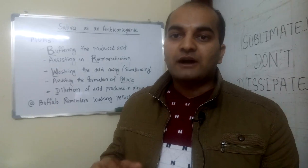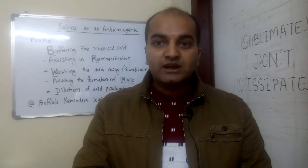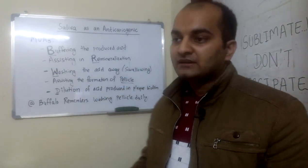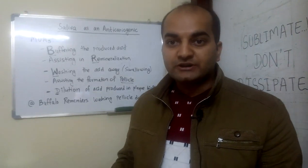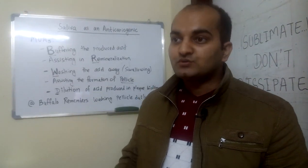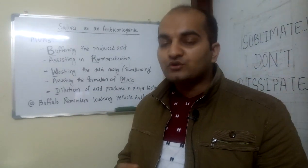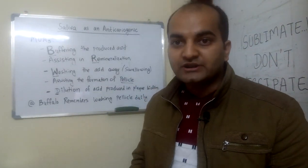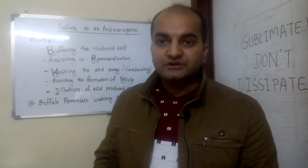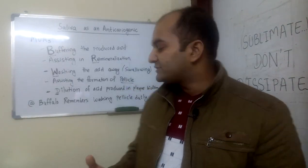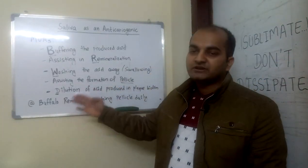The acid environment of the oral cavity does not fall below 5.5, which is the critical pH for enamel, and 6.5 is the critical pH for dentin. So as long as the acid produced is diluted, it does not harm the teeth sufficiently.